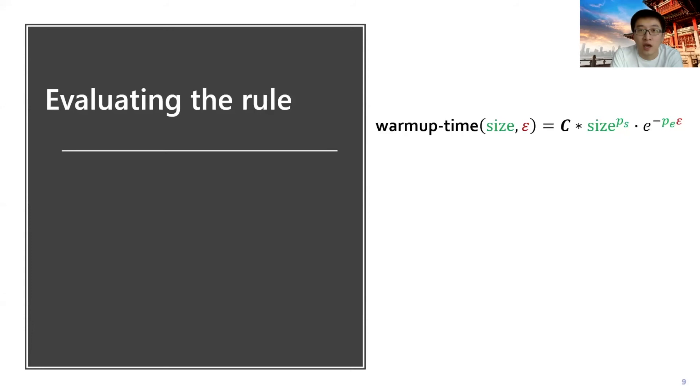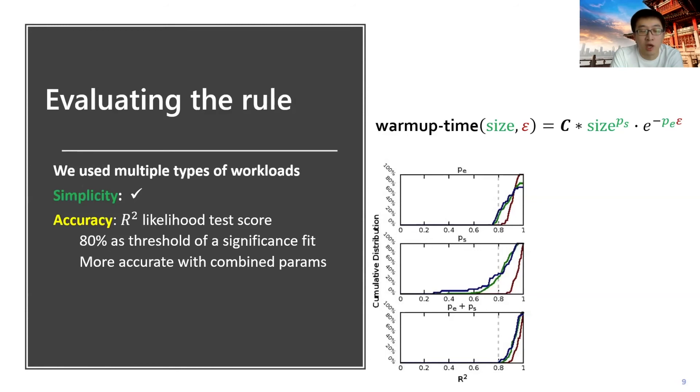So we want to evaluate the other requirements of the rule. In our evaluation, we use multiple types of workloads including storage and CDN traces. We've shown that the formula can meet the simplicity requirements because it doesn't have a bunch of parameters and it's simple enough to use. For accuracy, the main part of the derivation is the regression. So we use the R-square likelihood test to evaluate the accuracy and we set 80 percent as a significant fit threshold.